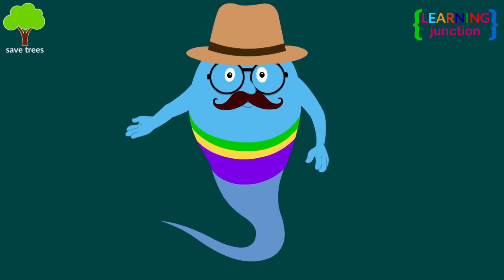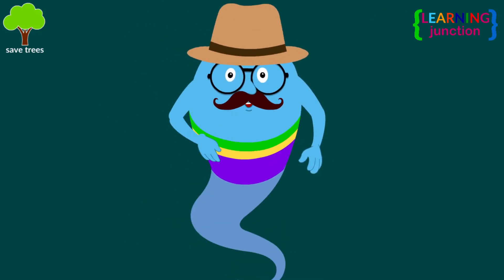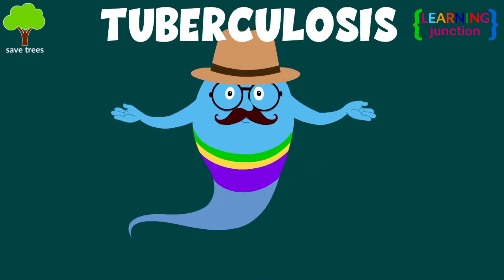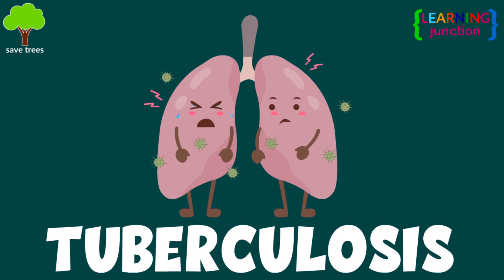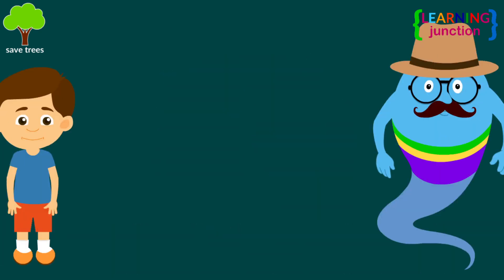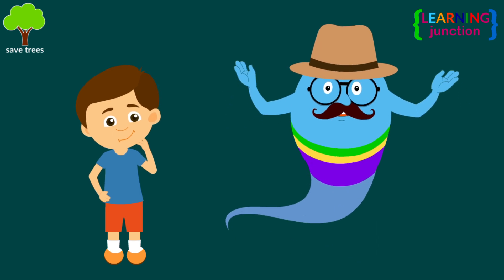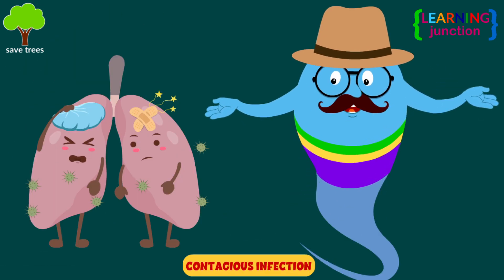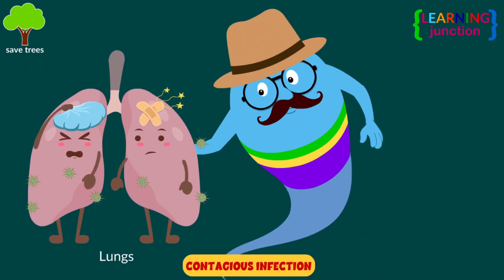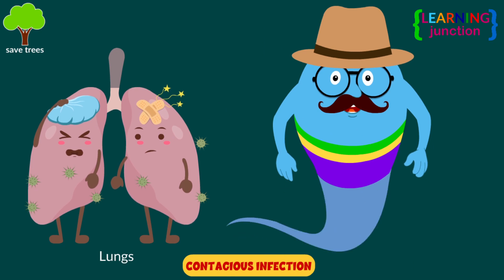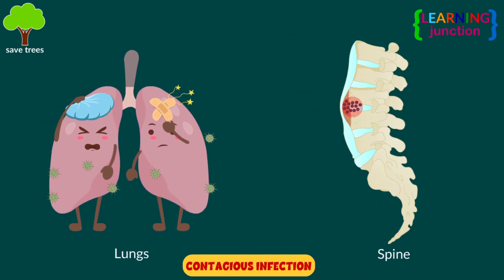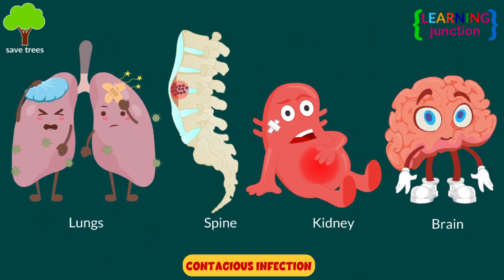Hello friends, today we'll learn about tuberculosis. Tuberculosis, or TB, is a contagious infection that normally affects the lungs. It can also spread to other parts of the body, like the spine, kidneys, and brain.